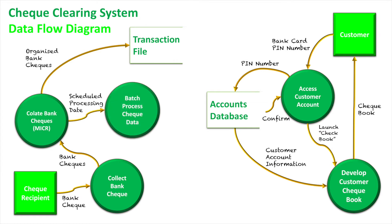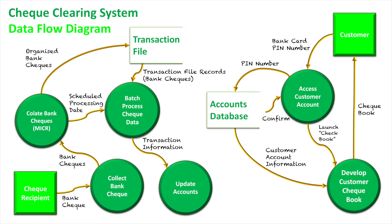When the scheduled time for processing comes, we batch process all this check data — not just one check, but thousands of checks accumulated possibly within a day. The transaction file records, containing all these thousands of bank checks collected, all get batch processed at the same time. It's an automated process, and it would be very repetitive for an individual to process all these thousands of checks manually. Once batch processed, the transaction information is sent for updating.